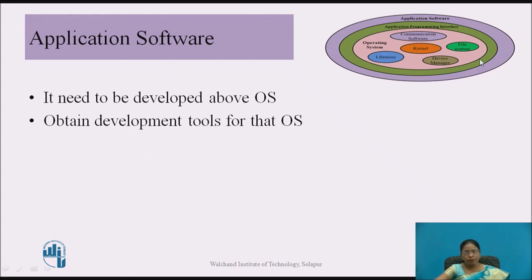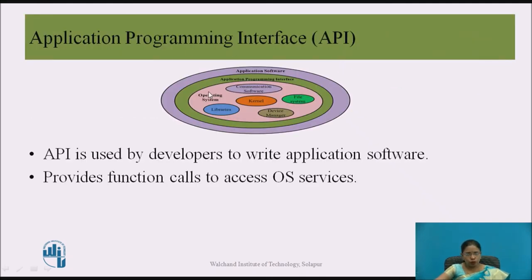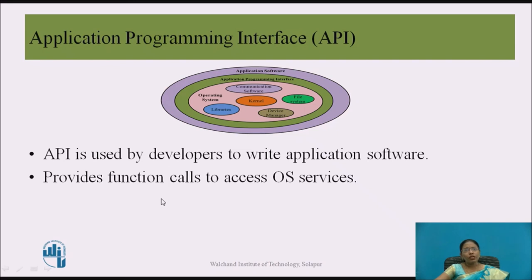Between the OS and the application software there is the application programming interface, called API. API is used by developers to write the application software. It provides functional calls to access operating system services — that is what the application programming interface does.